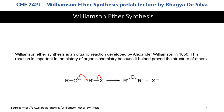In today's lab, we are following an experiment that demonstrates the synthesis of an asymmetric ether using the Williamson ether synthesis organic reaction. This organic reaction was developed by a scientist called Alexander Williamson in 1850, so it's named after him. It was a very important reaction in the history of organic chemistry because it helped prove the structure of ethers.